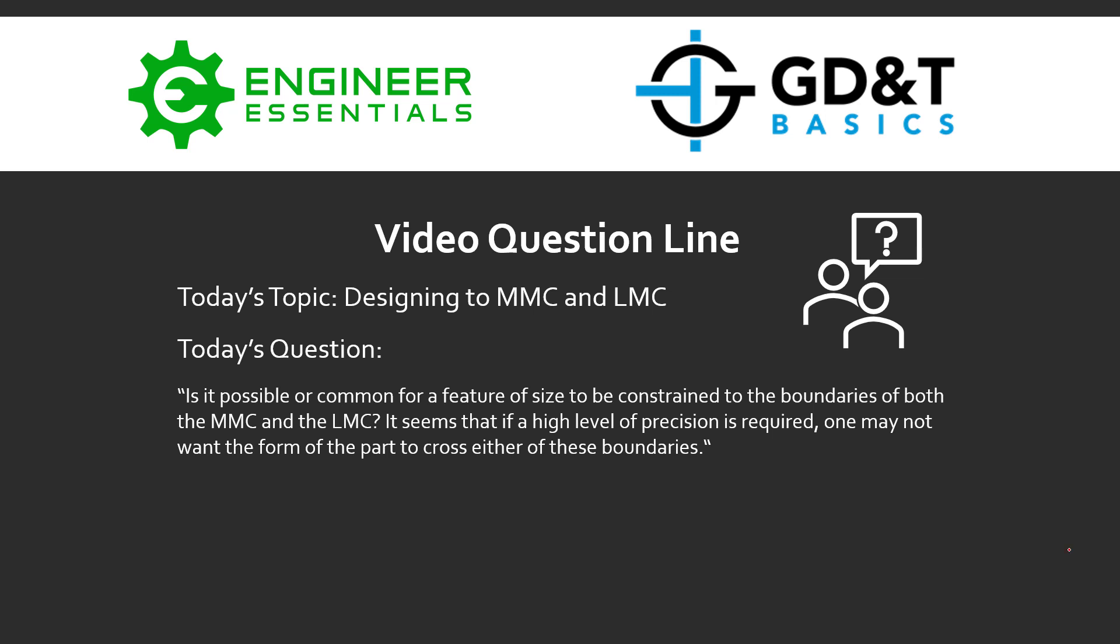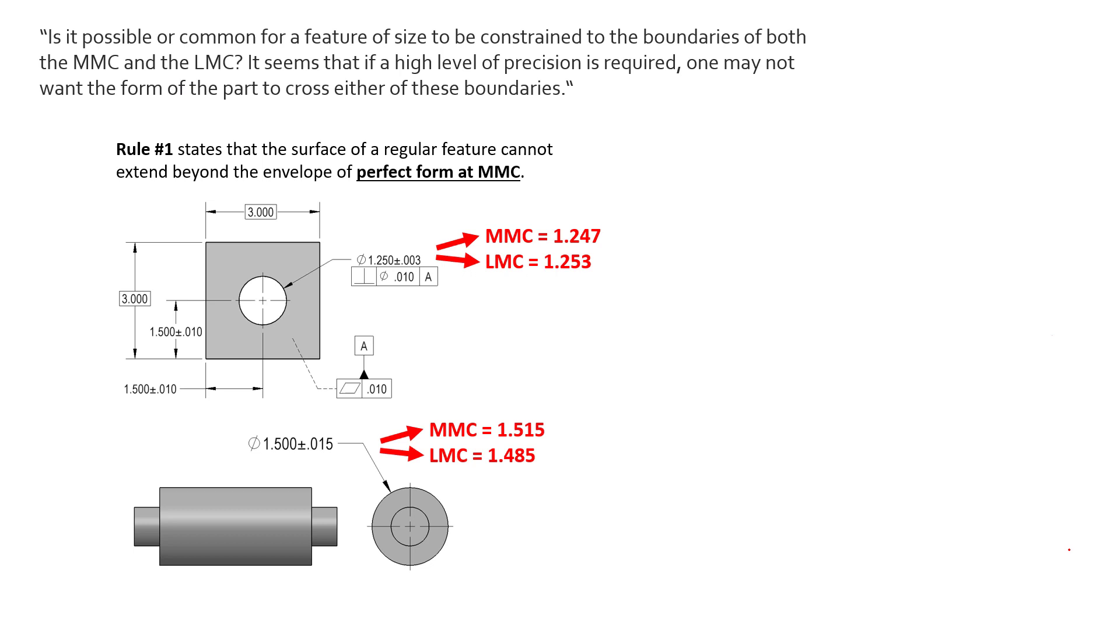I'm gonna challenge that a little bit here and we'll take a look at a couple examples to see if we truly do care about both boundaries. So first off, what this is referring to is Rule Number One, and Rule Number One states that the surface of any regular feature of size cannot extend beyond the envelope of perfect